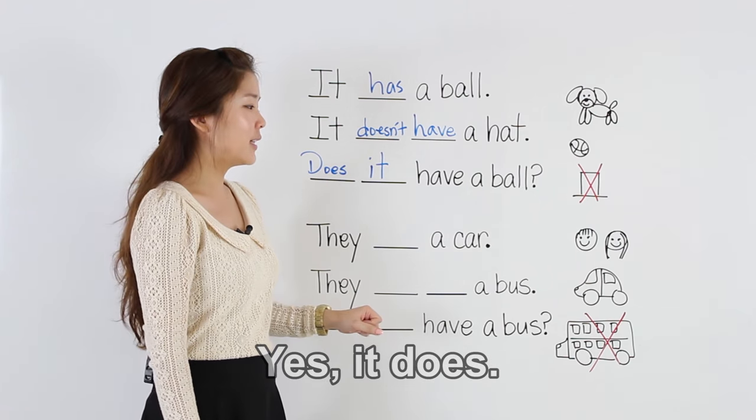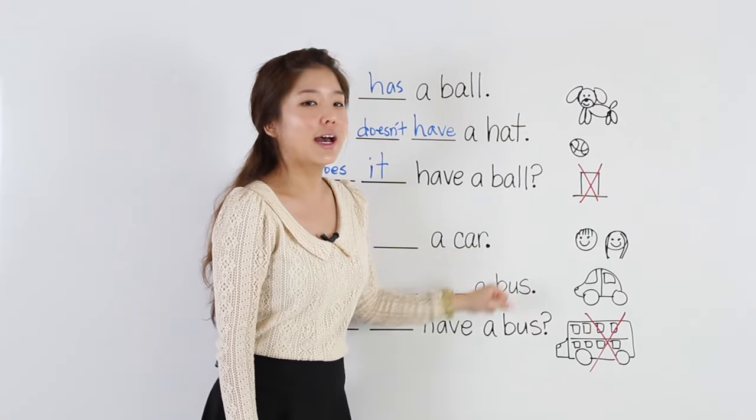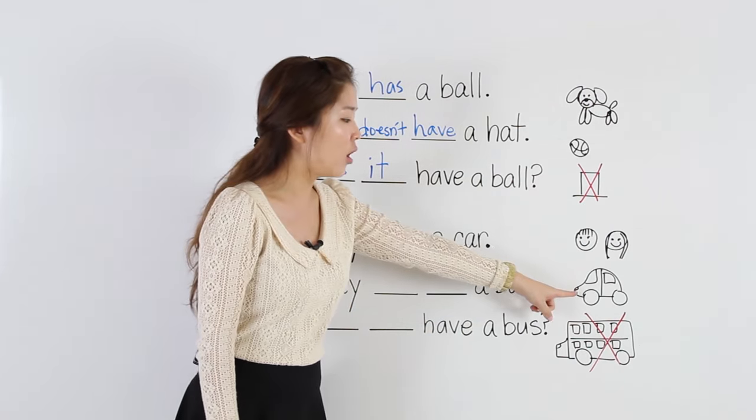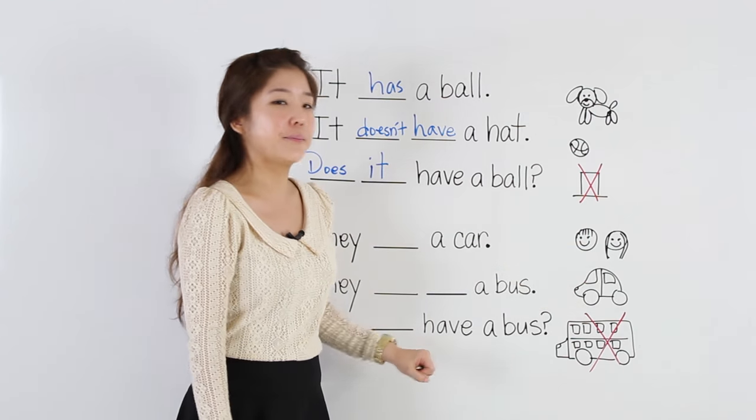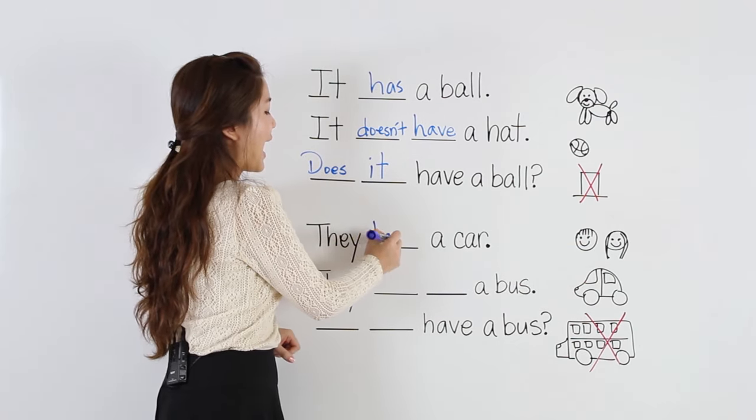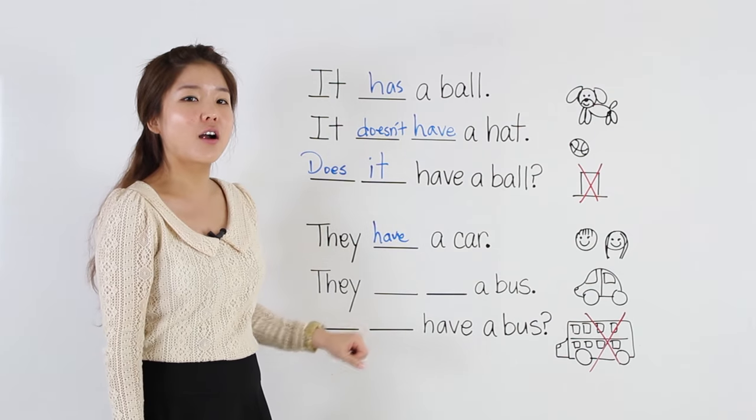Let's move on to the next part. Here we have two people, so we're going to say they. And a car that belongs to them. For they, we have to say have. They have a car.